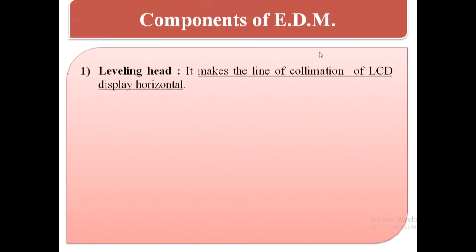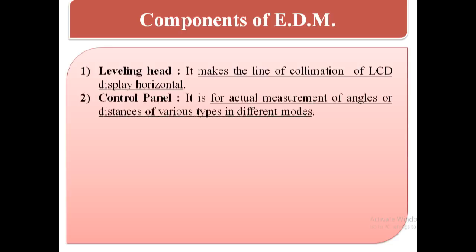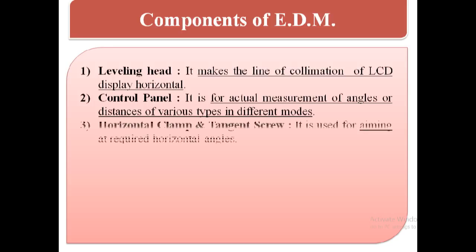Components of EDM: 1. Leveling head — it makes the line of collimation of the LCD display horizontal. 2. Control panel — it is for actual measurement of angles or distances of various types in different modes. 3. Horizontal clamp and tangent screw — it is used for aiming at required horizontal angles.